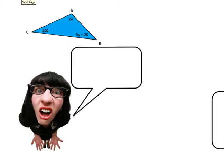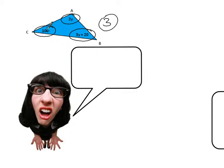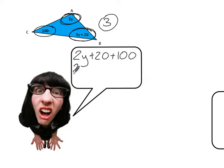I can see here that I've got a triangle. And I know a triangle has got three angles. Now I can see I've got a y here and I've got a y here and 20, and I've got a 100 here. So what I think you do is you say y — this y here and this y here gives you two y's — and then plus 20 and then plus 100. So we get 2y plus 120 if we simplify.